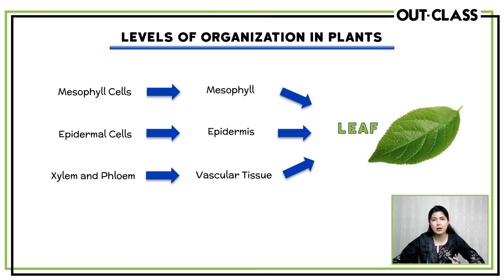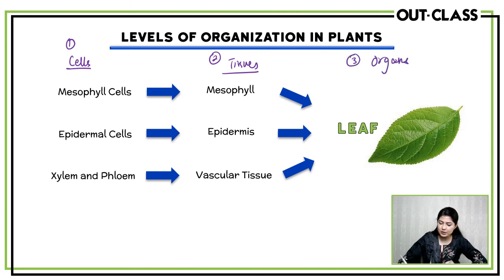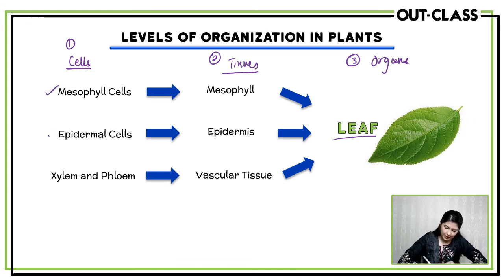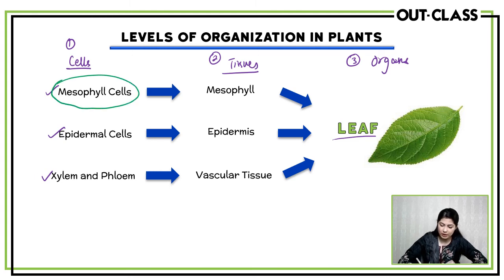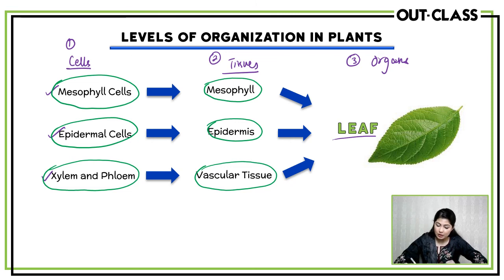Now what are the levels of organization in a plant? The first level is cells, followed by tissues, and finally organs. For example, a leaf is an organ. You have mesophyll cells, epidermal cells, and xylem and phloem cells as the basic cells. Your mesophyll cells form mesophyll tissue, epidermal cells form the epidermis, and xylem and phloem form the vascular tissue. These three different types of tissue, each composed of one type of cell, combine to form the organ which is the leaf.